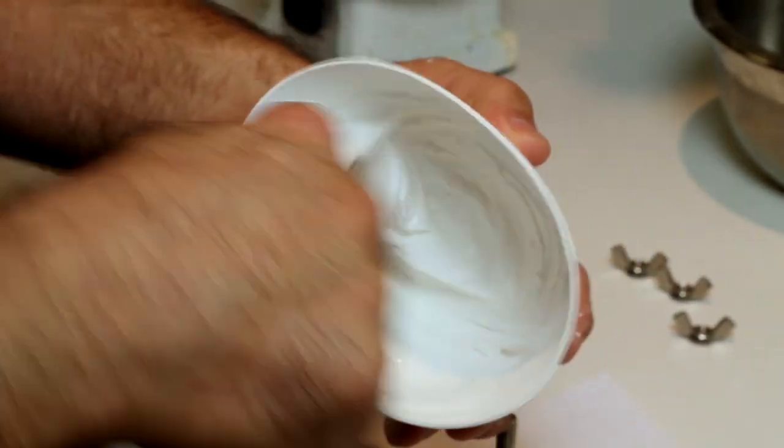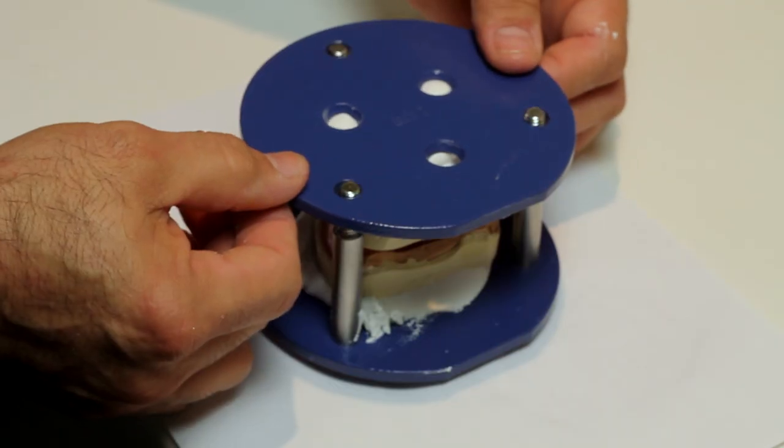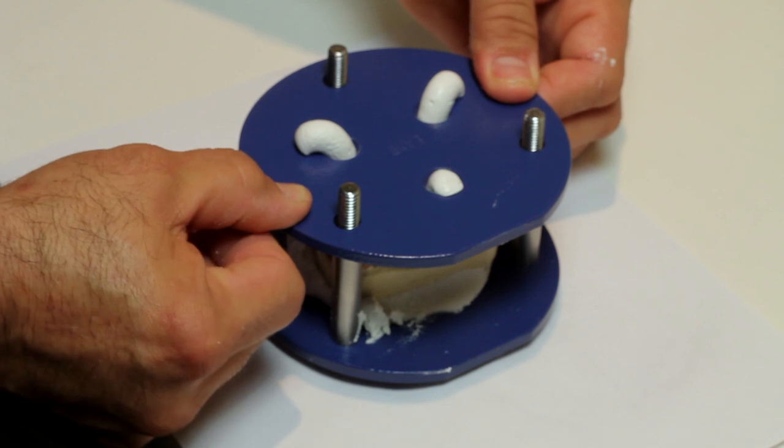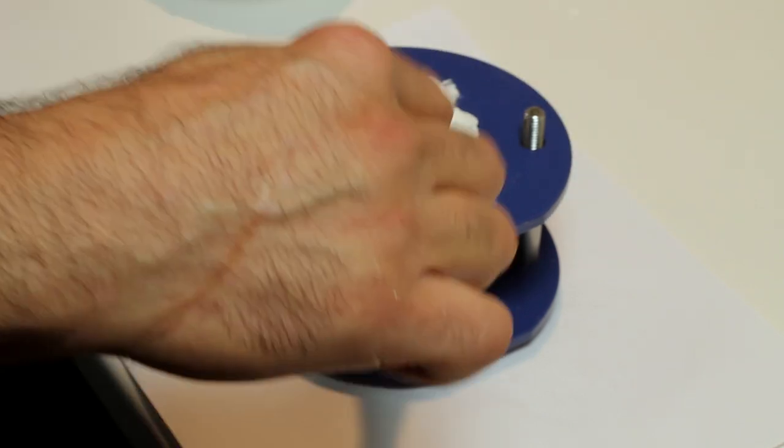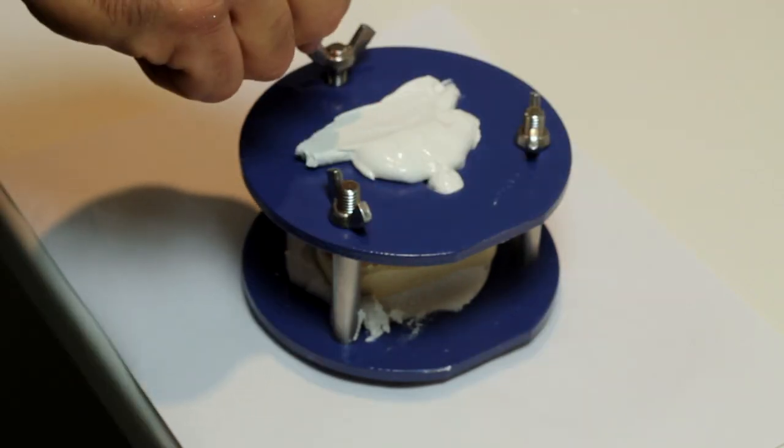Mix more plaster. Add plaster to the top of the index all the way up through the hole in the upper member of the jig. Smooth out the plaster that's expressed through the hole in the upper member. Tighten the wing nuts all the way down. Let it set.